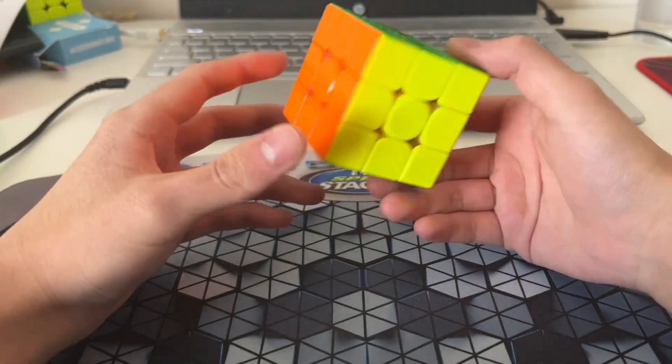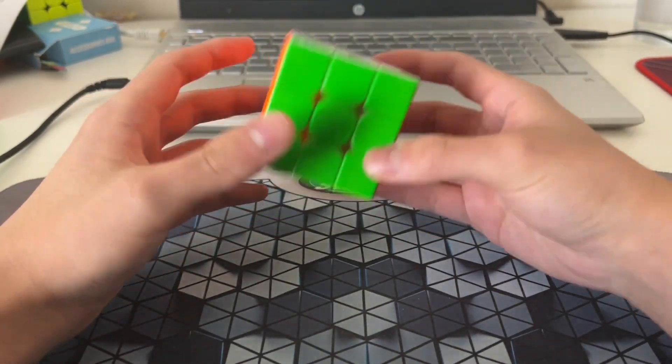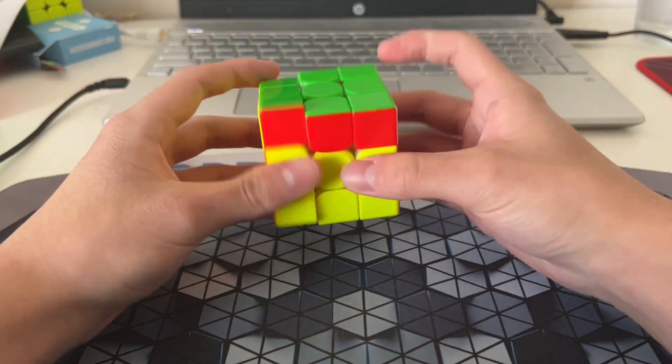Okay, these are going to be 5 advanced 3x3 example solves, and for reference, I average around 6.4 or 6.5 seconds. Alright, solve one.